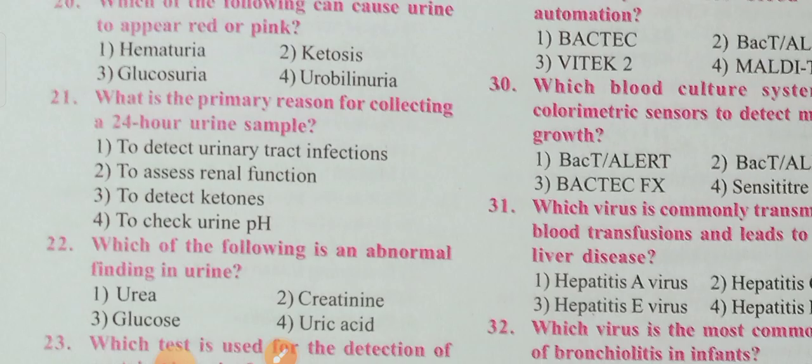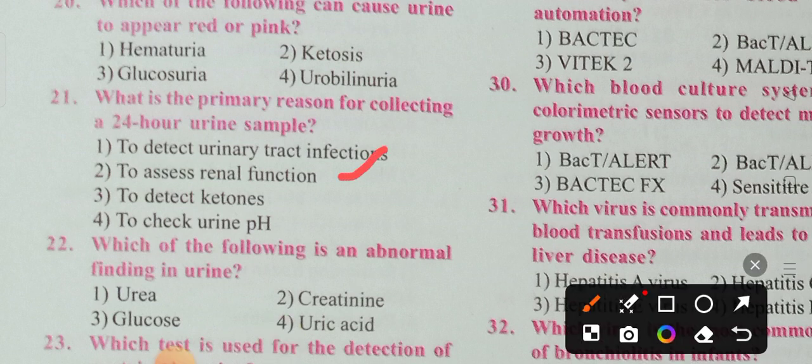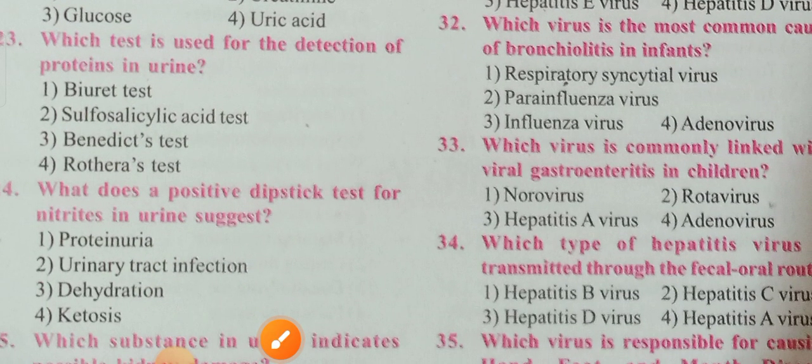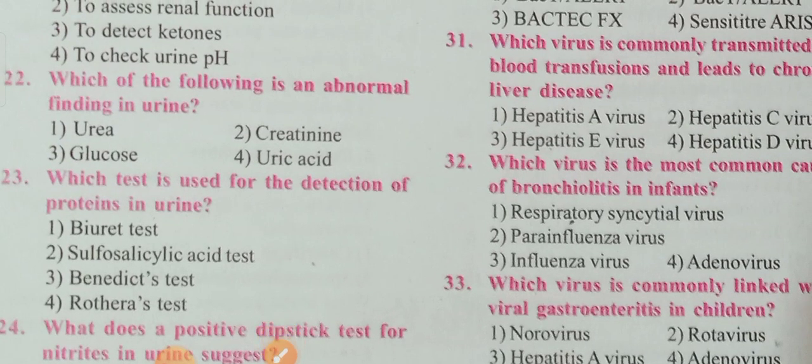Question 21: If you collect a 24-hour urine sample, you will be looking for the reason. Option 2 is the correct answer — to assess renal function. Question 22: Which of the following is an abnormal finding in urine? Option 3 is the correct answer — glucose.